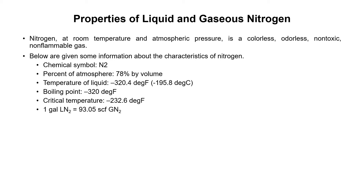One gallon of liquid nitrogen is equal to 93.05 SCF of gaseous nitrogen — this is a very important conversion factor to memorize, as it is used in the field multiple times. One gallon of liquid nitrogen is also equal to 13.8 SCF of liquid nitrogen. The density of liquid nitrogen is 6.74 pounds per gallon (PPG).